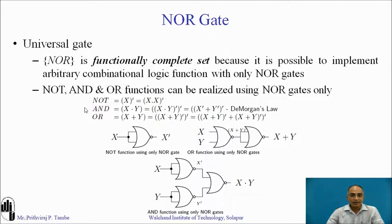The second expression is an AND expression written as x · y. For that purpose we need to first apply involution and then De Morgan's theorem. So we have (x · y)̄̄, where the double bar represents involution. Then applying De Morgan's law, it becomes (x̄ + ȳ)̄.